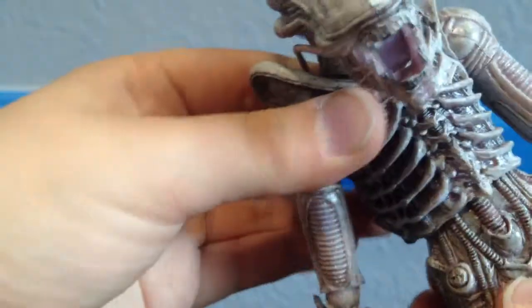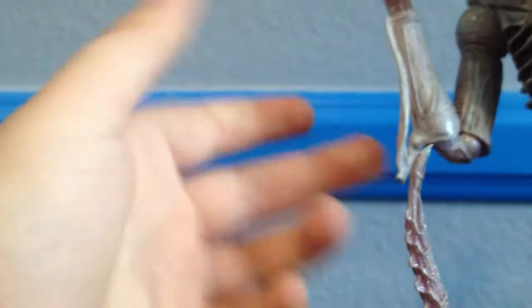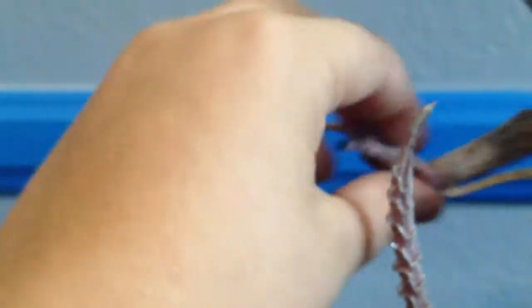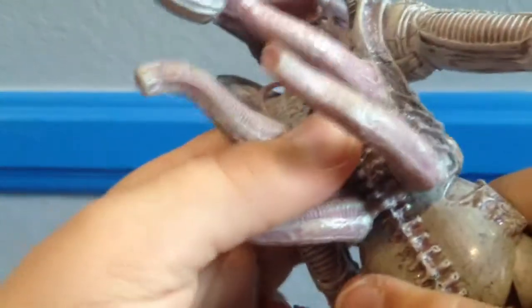Articulation wise, this guy's head's on a ball joint. His arms can move up and down, backwards, forwards. He's got a double-jointed elbow. His hands can move all the way around and up and down. His chest, his waist here is on like a swivel. I don't necessarily know.